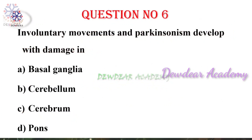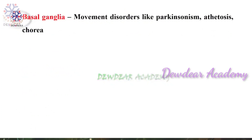Question number six: Involuntary movements and parkinsonism develop with damage in — options: basal ganglia, cerebellum, cerebrum, pons. The right answer is basal ganglia. Basal ganglia is associated with movement disorders like parkinsonism, athetosis, and chorea.